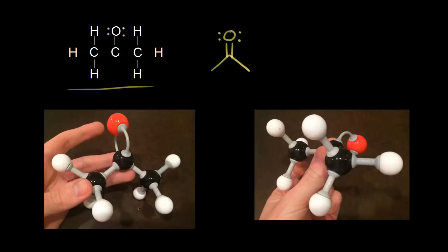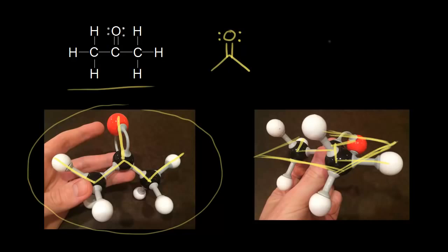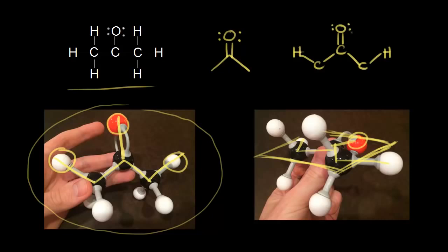What would be a three-dimensional bond line structure for acetone? On the left here is a model of the acetone molecule. Hopefully you can see that these atoms are all in the same plane of the page — and so is the oxygen. That's a little bit easier to see in the picture on the right, where these atoms are all in the same plane. We can draw in our three carbons, and according to this picture, these two hydrogens are in the plane of the page, as is this oxygen. I'll go ahead and put in lone pairs of electrons on the oxygen.